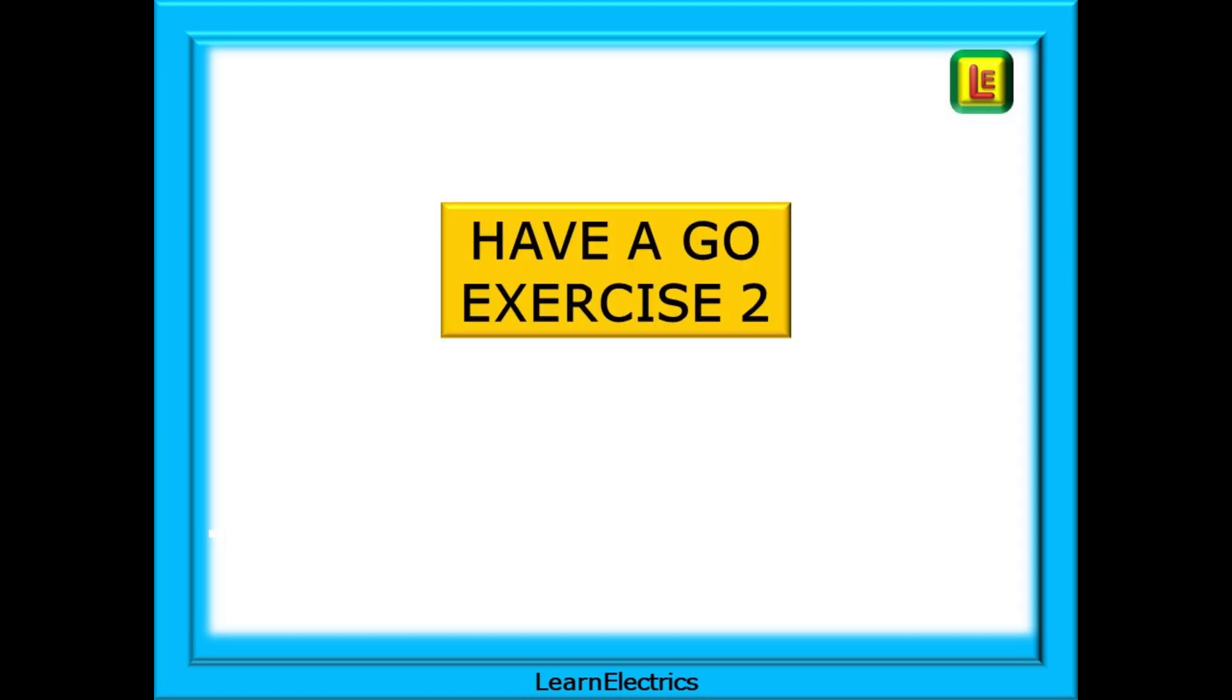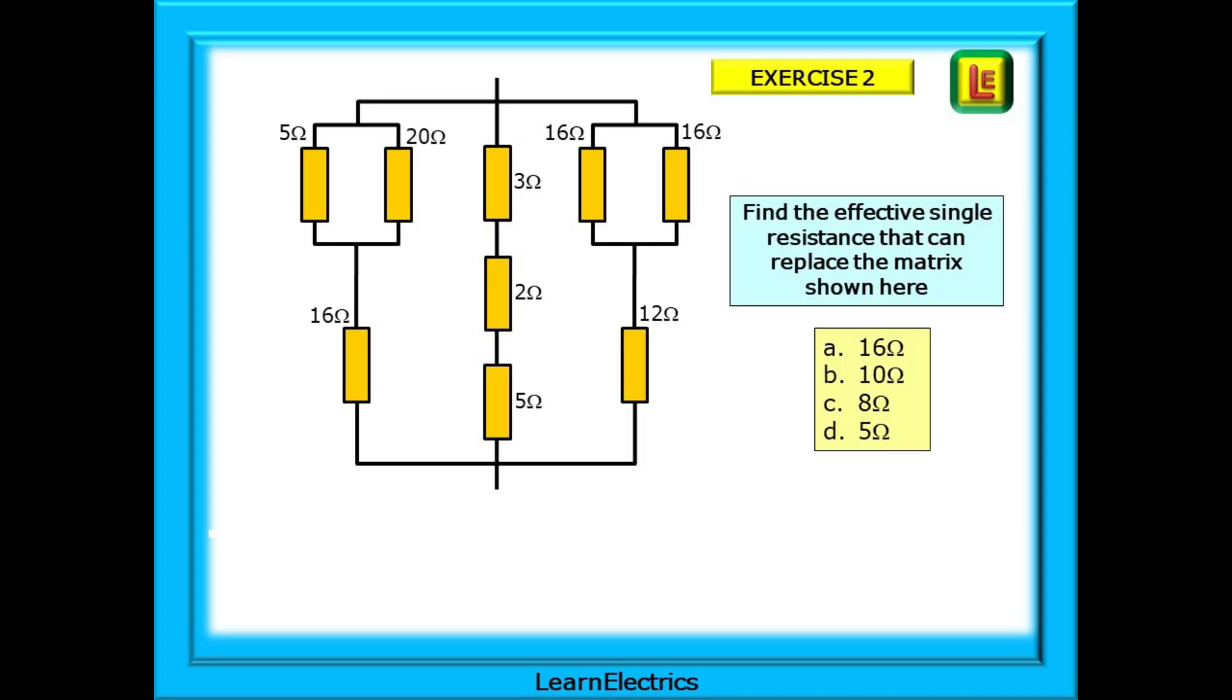Have a go at exercise number two now. The same method will apply. All we've done is to rearrange the resistors slightly and change the numbers. Remember to pause the video whilst you do your calculations. The question asks find the effective single resistance that can replace the matrix shown here. And again there are four possible answers but only one is correct.